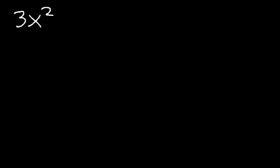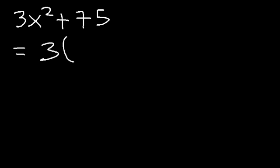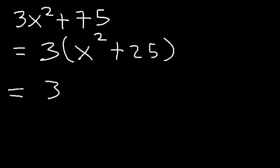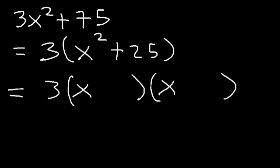Now let's work on some practice problems. For the first one, we can't take the square root of 3 or 75, but notice we can take out the GCF which is 3. 3x squared divided by 3 is x squared, and 75 divided by 3 is 25. Always check to see if you can take out the greatest common factor. Now we have the sum of squares, so it factors as x plus 5i times x minus 5i, since the square root of 25 is 5.